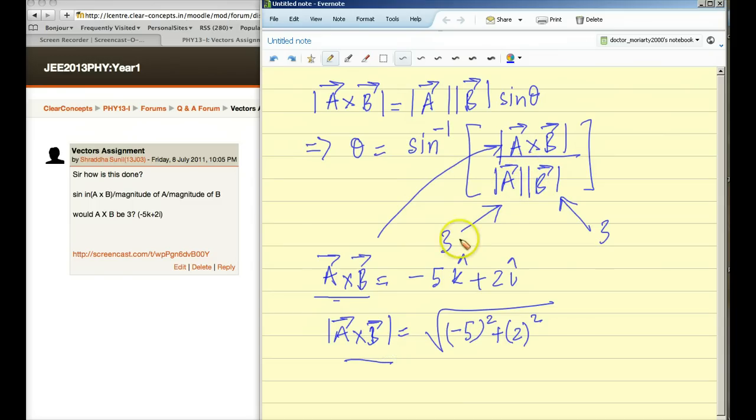You know magnitude of a is 3, magnitude of b is 3, right? You should be able to find sine inverse of the net number you get by dividing this. Alright? That should answer your question. Let me know if you still have problems.